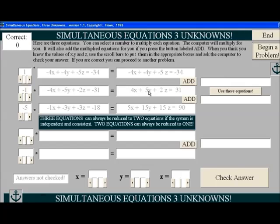Negative 4y plus 5y is 1y. Negative 5z plus 2z is negative 3z. I'm pushing the Add button between these two and you'll see that I get 1y minus 3z equals negative 3. Got that?